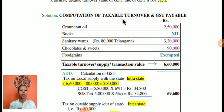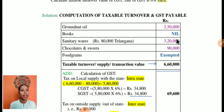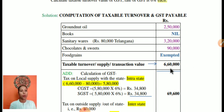Now for the computation of taxable turnover and GST payable: groundnut oil is taxable, books are exempted, sanitary ware total is 3,20,000. You must first take the total and analyze the taxable turnover. Chocolates and sweets are 90,000. Food grains are exempted. The total taxable turnover comes to 6,60,000.